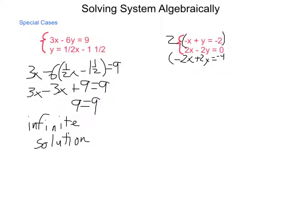Adding these two equations together, I end up with 2x + -2x, which is 0. -2y + 2y, which is also 0. 0 + -4, which is -4. Simplifying, I have 0 = -4.